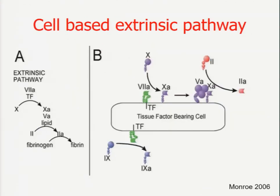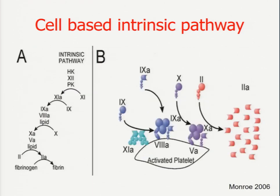The typical cascade system as we know it is still valid, of course, but we have to see it in combination with cells. The extrinsic activation will be activated on tissue factor-bearing cells, and very importantly, the intrinsic activation — which is mainly relevant for extracorporeal systems — is actually generated on the surface of activated platelets. So platelets are an extremely important component when we do anticoagulation management of an ECMO.